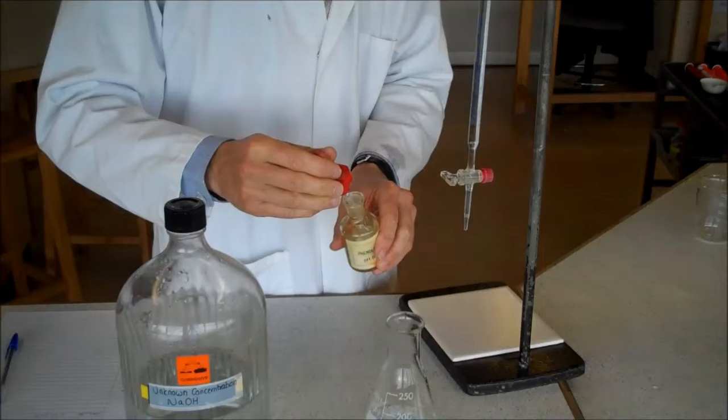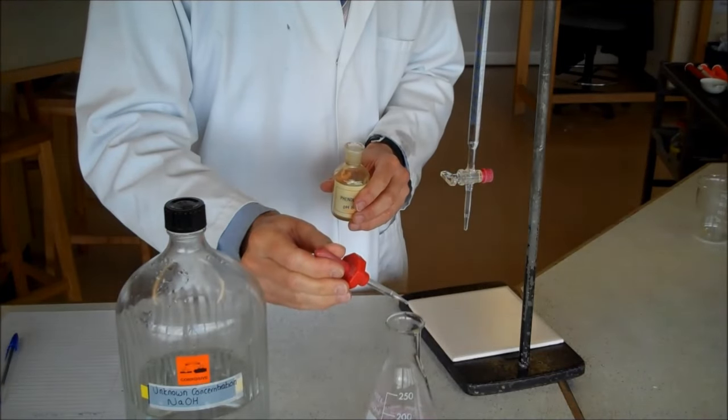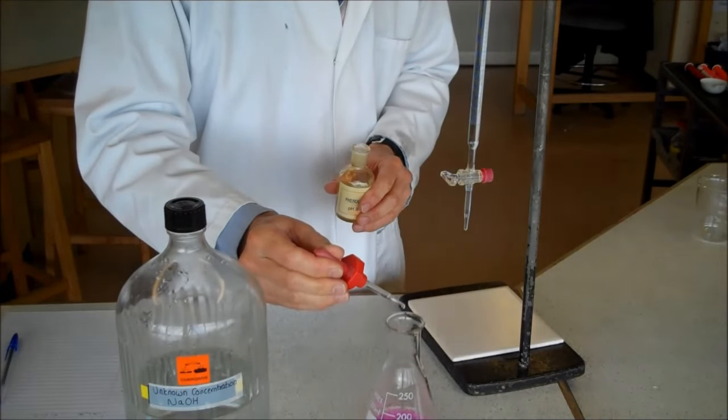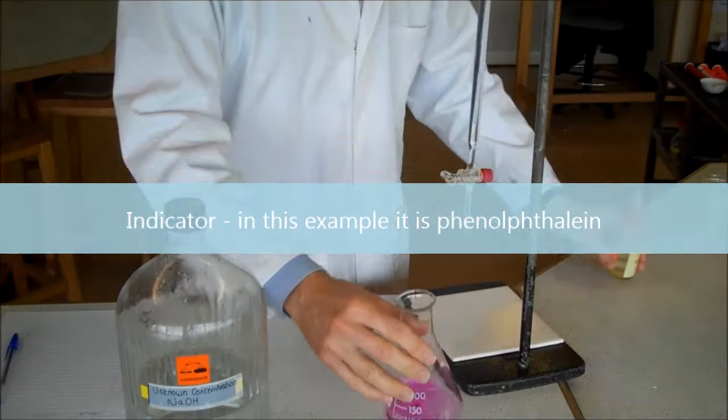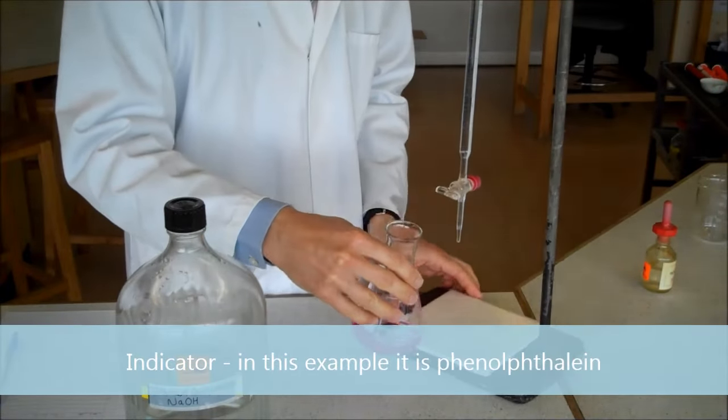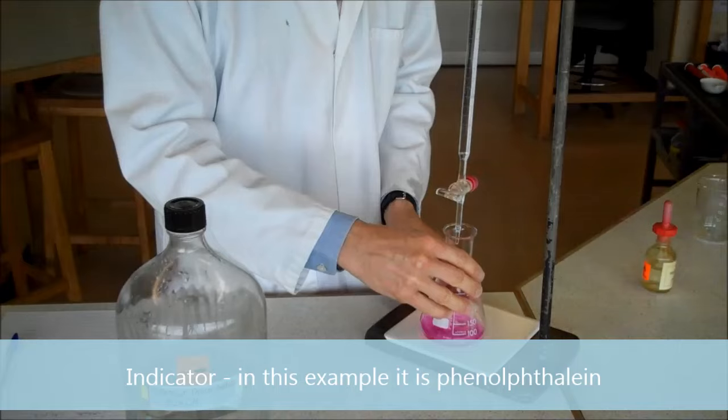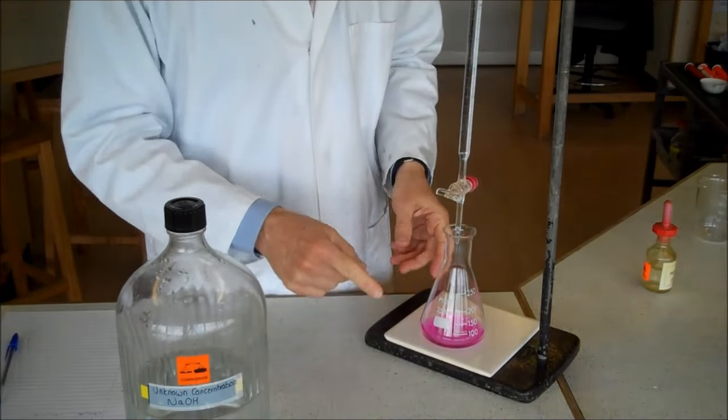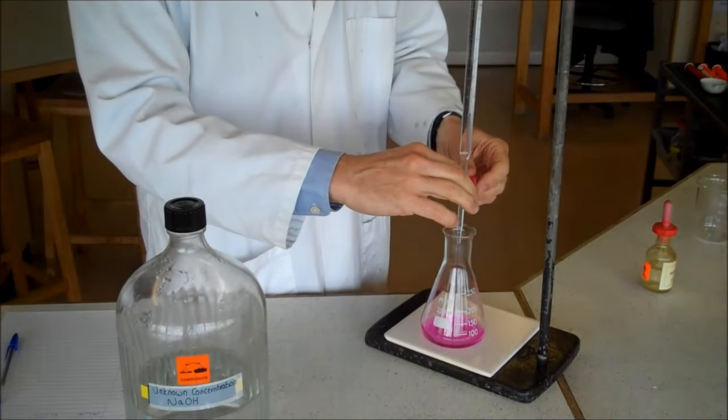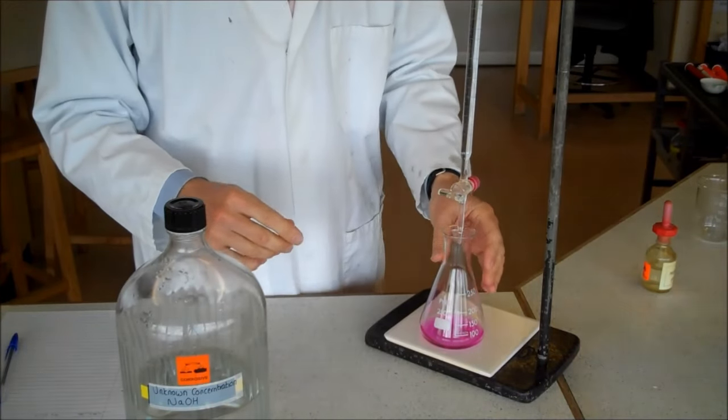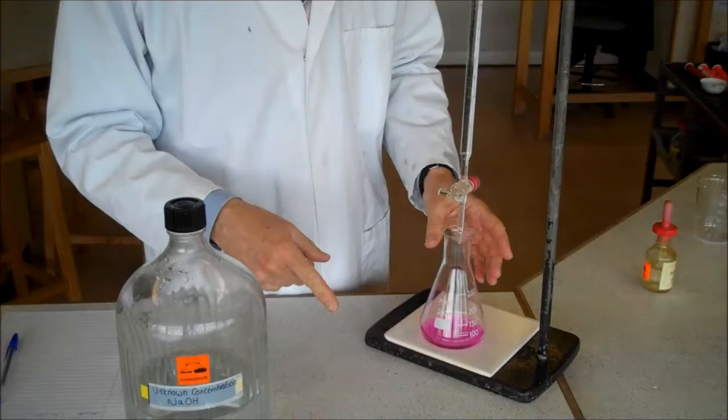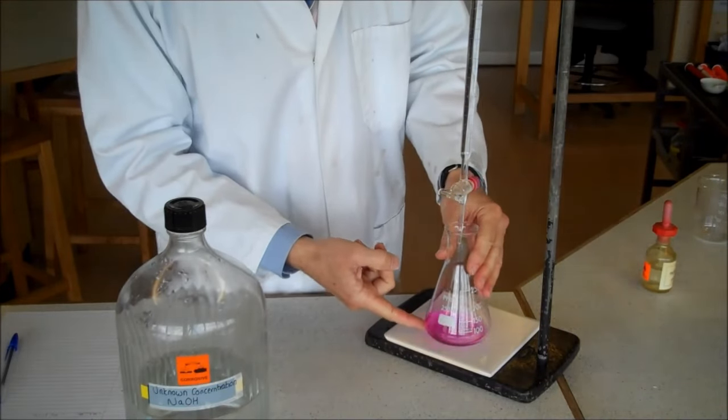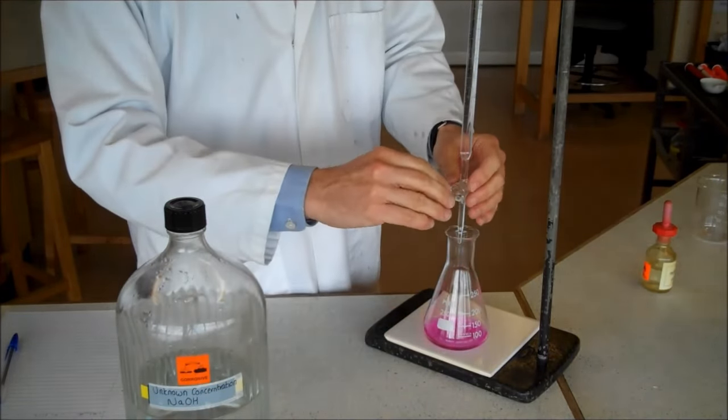We add a few drops of indicator. One, two, three, four, five. Near enough. That is phenolphthalein. It's very good. It gives a nice, clear color. Bright pink when it's alkali and colorless when it is acid. Colorless, not clear. A lot of people say clear, but it's already clear. It's a clear pink liquid and it goes to colorless in acid.